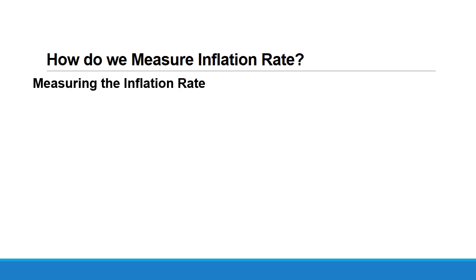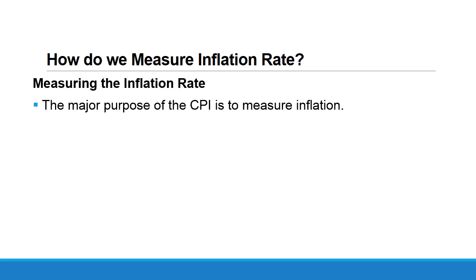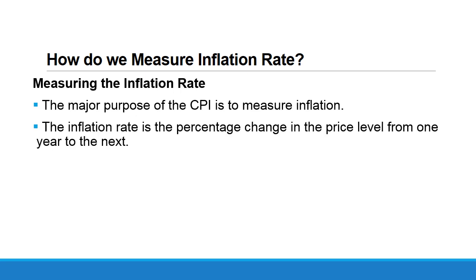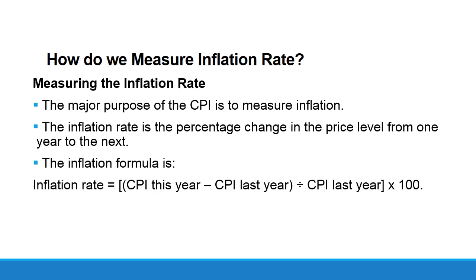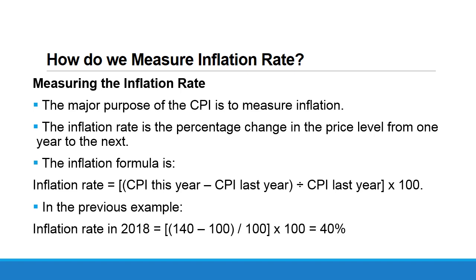Finally, we can measure the inflation rate using the following formula. The inflation rate is the percentage change in the price level from one year to the next. Inflation rate equals CPI this year minus CPI last year, divided by CPI last year, times 100. In our example, the inflation rate in 2018 equals 140 minus 100, divided by 100, times 100, which equals 40 percent.